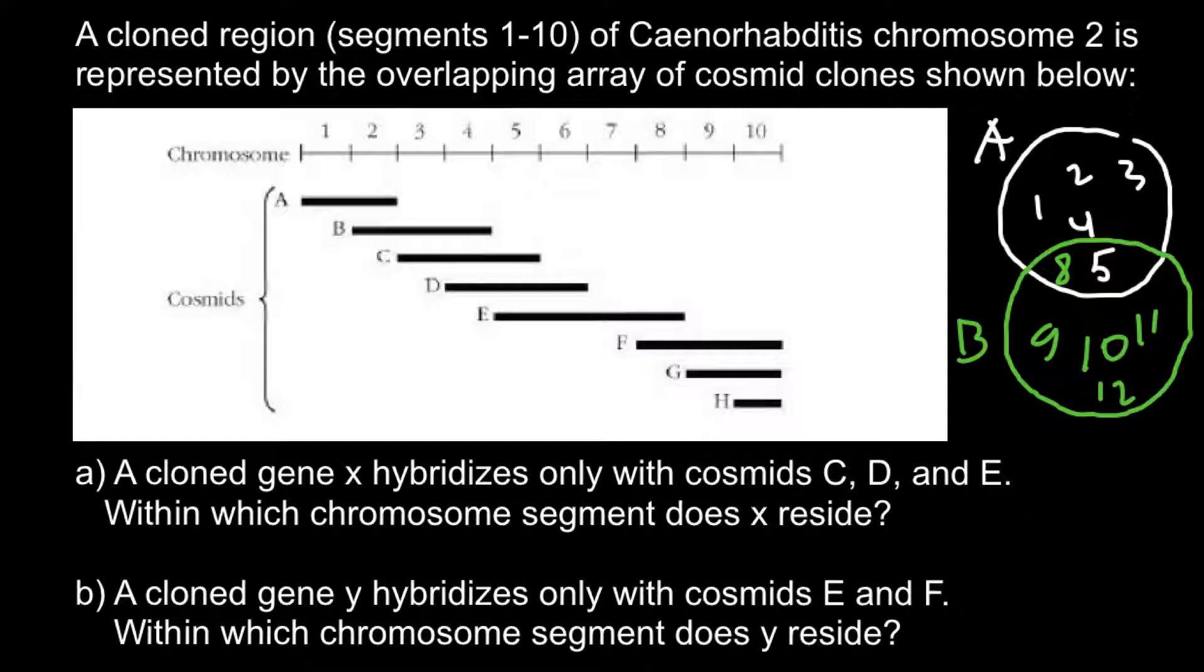So we are told that we have cosmids E and F. E is here—it lies between fragments number 4 and 8, so I can project it here.